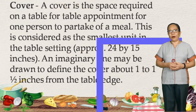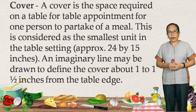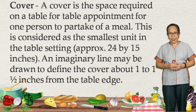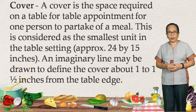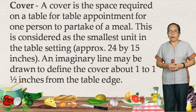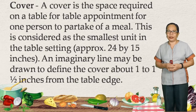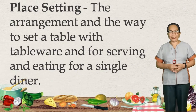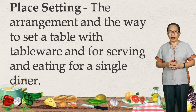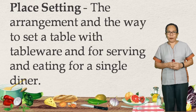Next, we have the cover. A cover is the space required on a table for table appointments for one person to partake of a meal. This is considered the smallest unit in the table setting, approximately 24 by 15 inches. An imaginary line may be drawn to define the cover about 1 to 1.5 inches from the table edge. Then we have the place setting — the arrangement and the way to set a table with tableware for serving and eating for a single diner.